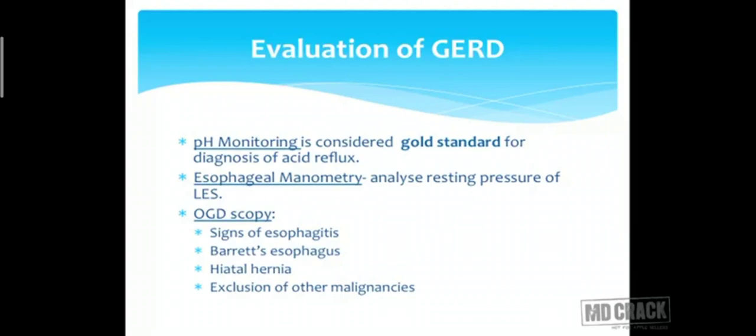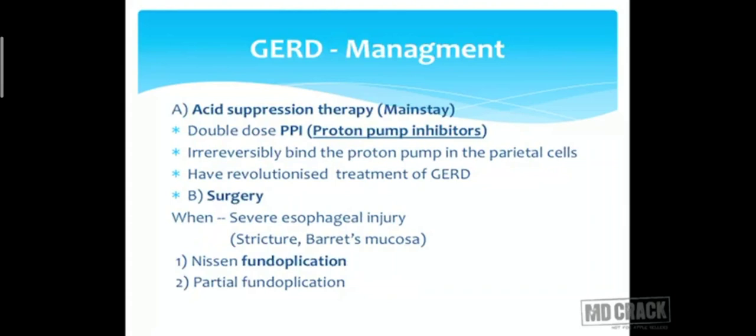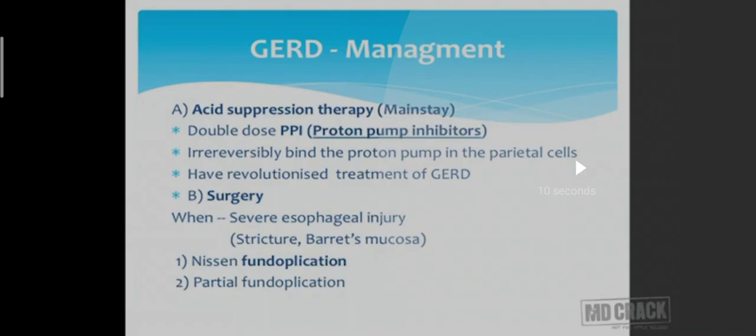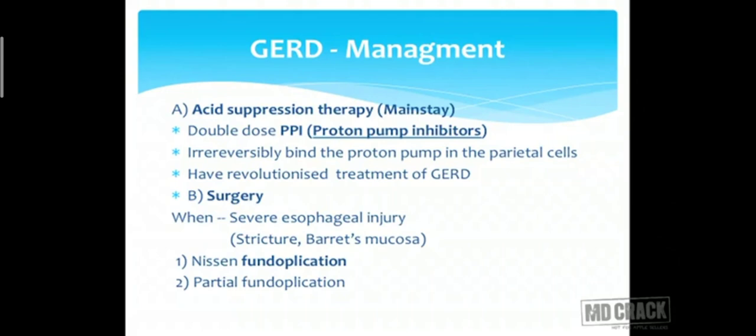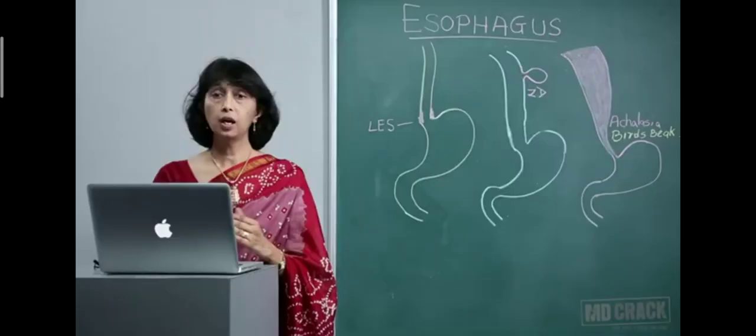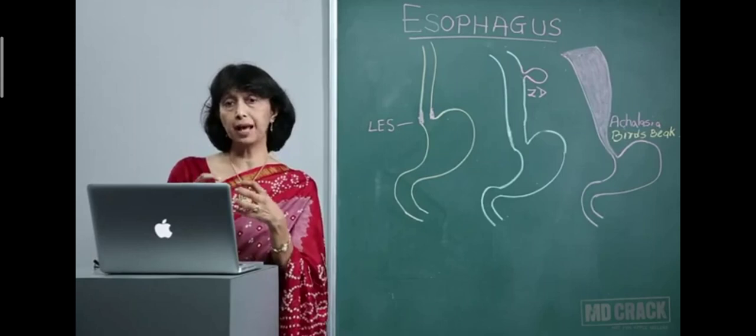Management of GERD focuses on suppressing the acid load on the esophagus; the mainstay is antacids, particularly proton pump inhibitors. If the patient does not respond, surgical therapy can be offered. When there are strictures from continuous acid insult or changes like Barrett's esophagus, the surgical procedure offered is fundoplication — either Nissen's fundoplication or partial fundoplication — where part of the esophageal end and stomach are plicated to narrow the opening and tighten the sphincter.